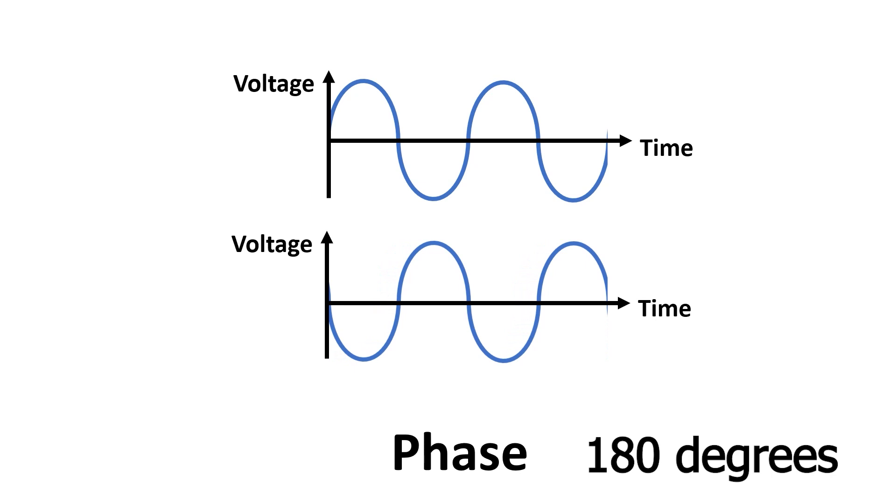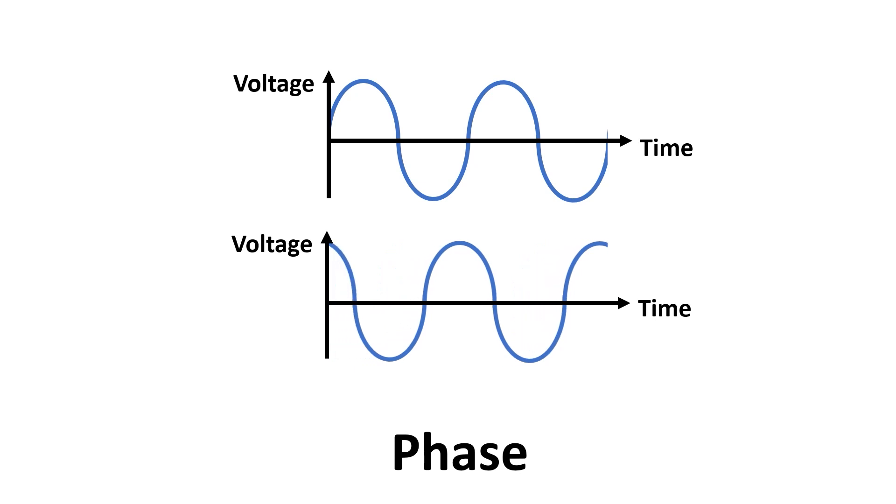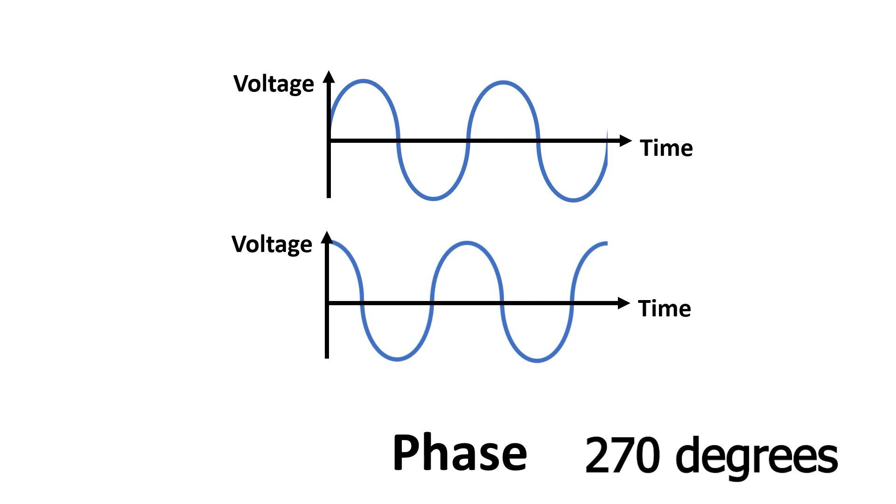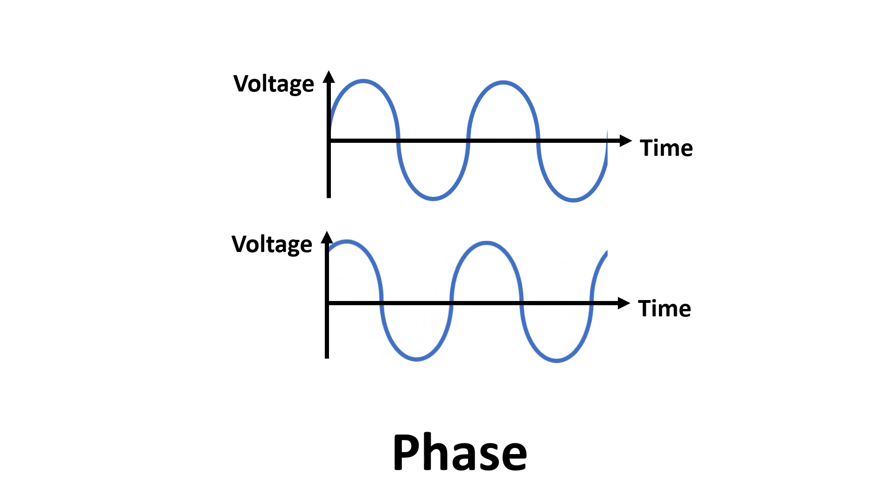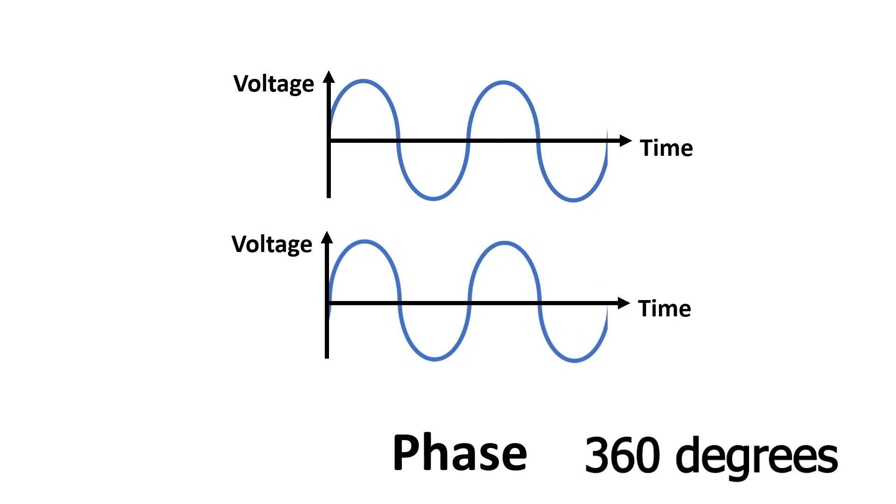Now the signals are completely inverse. This is a 180 degree phase shift. Three quarters of the way through the cycle, we're at 270 degrees. And if we keep going, the signals eventually line up again. This is 360 degrees, which is also 0 degrees. If you're not familiar with this, maybe replay this part of the video, or even write it down.